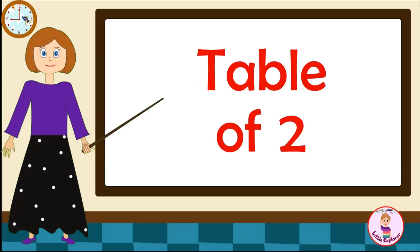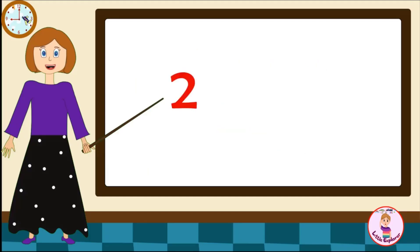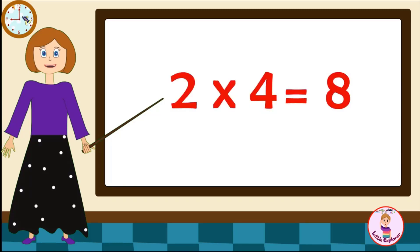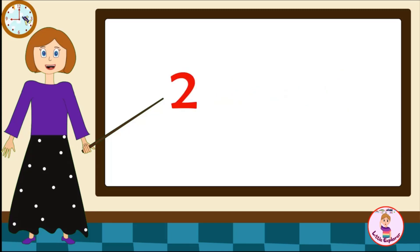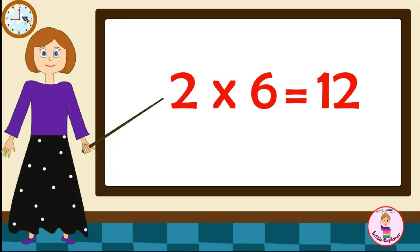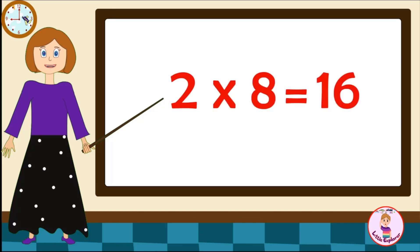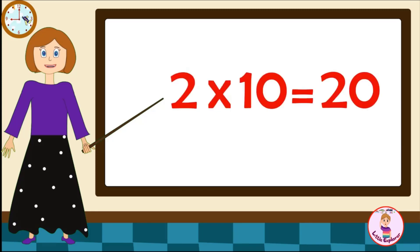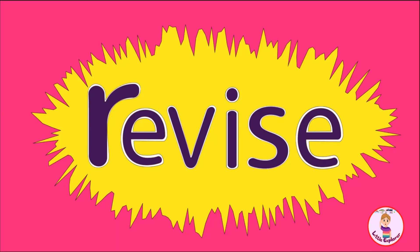Table of Two. Two-one's are two. Two-two's are four. Two-three's are six. Two-four's are eight. Two-five's are ten. Two-six's are twelve. Two-seven's are fourteen. Two-eight's are sixteen. Two-nine's are eighteen. Two-ten's are twenty.